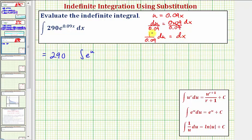but dx equals one over 0.09 times du, so let's go ahead and factor out the fraction. And then we have our differential u. Notice how now our integral fits the formula perfectly.